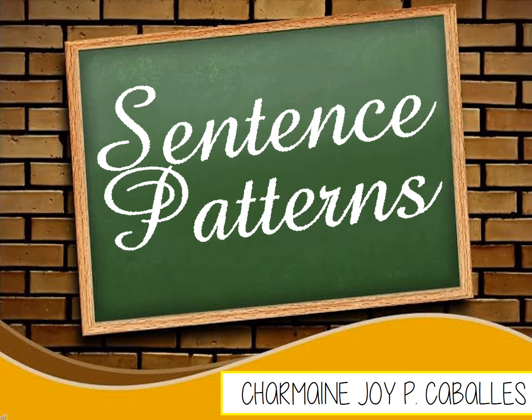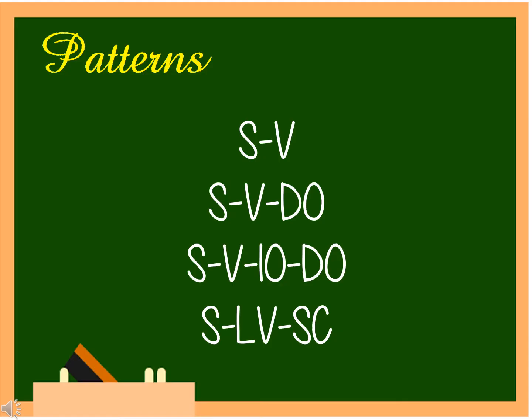This video is about sentence patterns. English sentences have a lot of patterns, but we will only be focusing on four patterns, namely SV, SVDO, SVIODO, and SVSC, which are considered the basic and most common patterns.